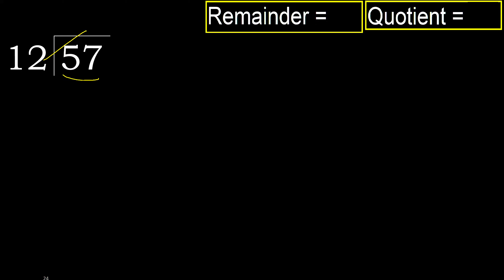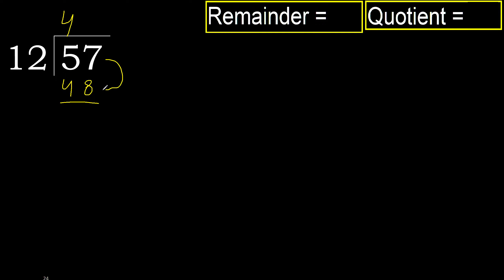But not greater. 12 multiplied by 5 is 60 — 60 is greater. 12 multiplied by 4 is 48 — 48 is not greater. 57 minus 48 is 9.